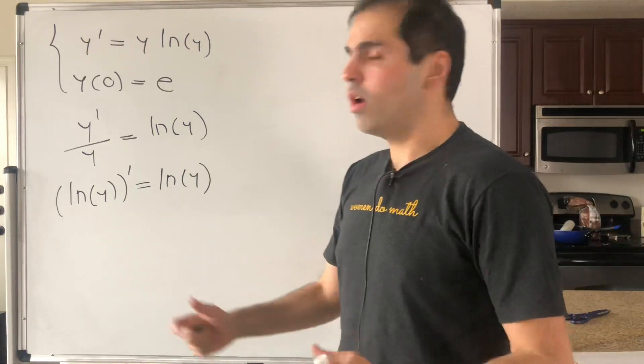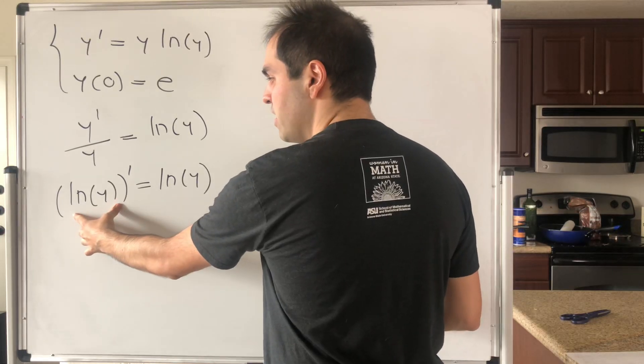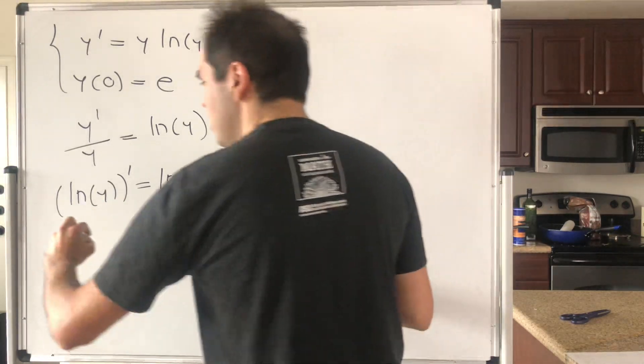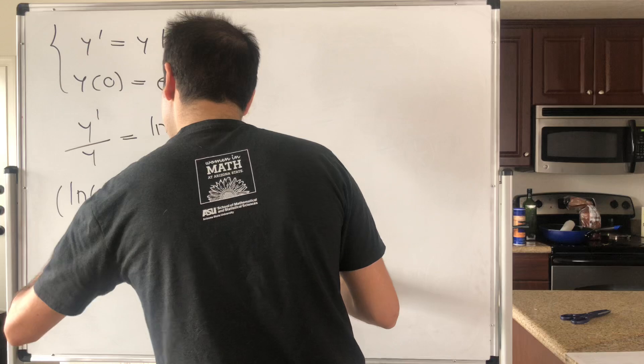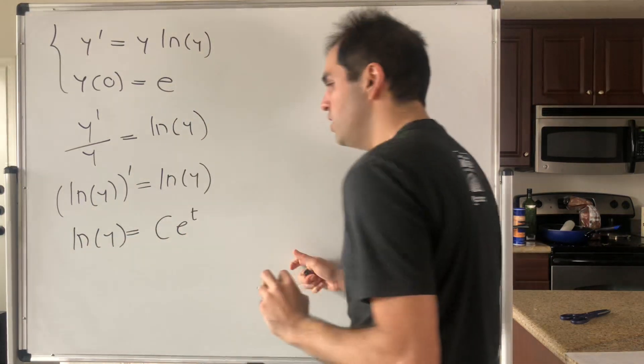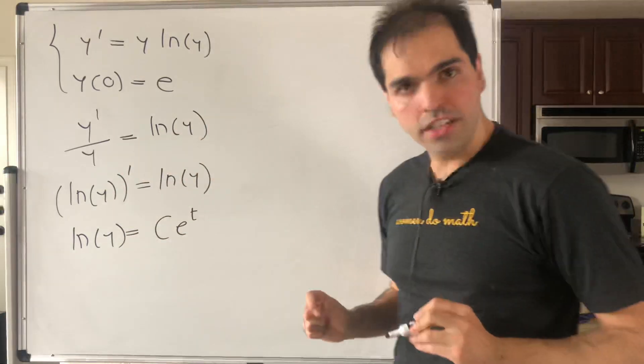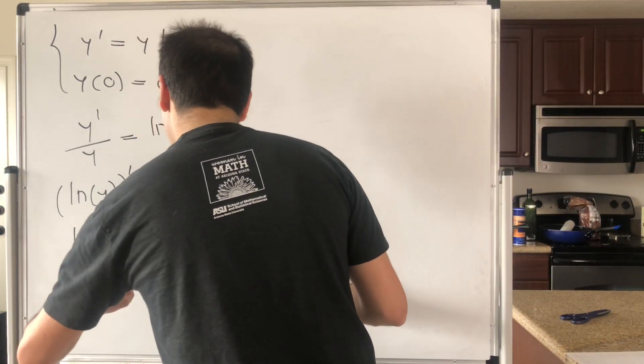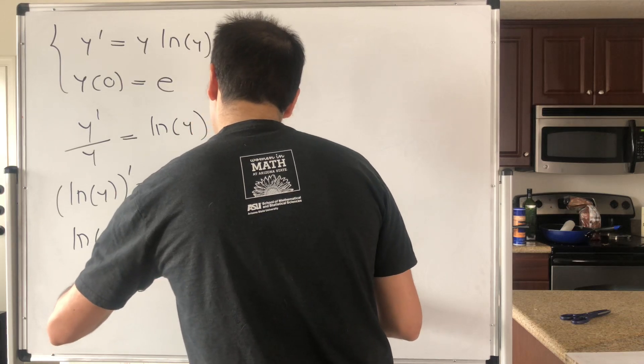And then notice what are we saying? We're saying the derivative of this function is itself, so the function is just an exponential solution. So it is c e to the t. And then if you exponentiate that, we get y equals e to the (c e to the t).